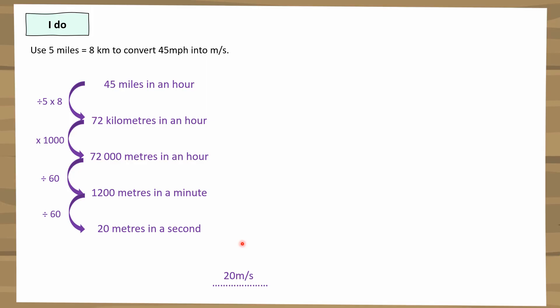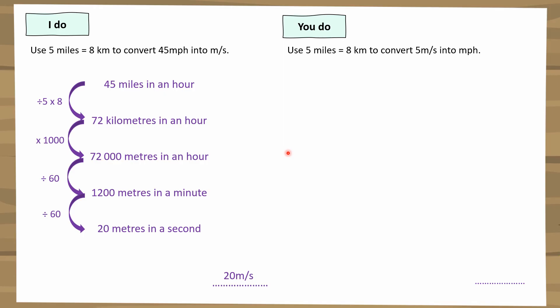Here's one for you to do. Instead of giving you one that is exactly the same, I thought I'd give you one the opposite direction. This question is: use five miles equals eight kilometres to convert five metres per second into miles per hour. See if you can work this out for yourself — pause the video and unpause when you're ready for the answer.